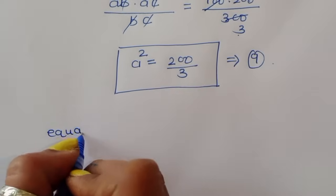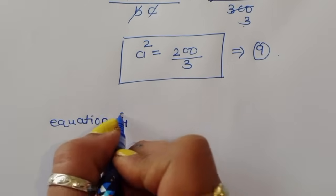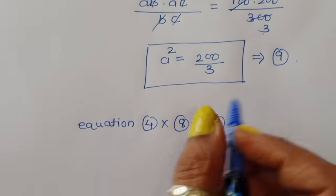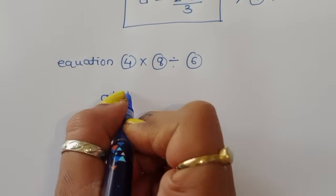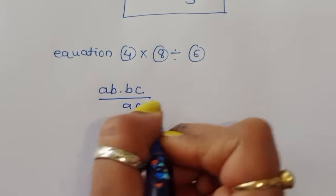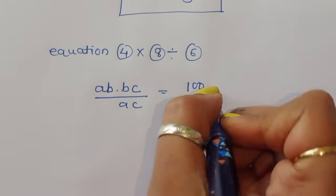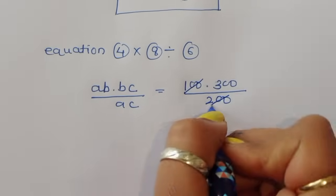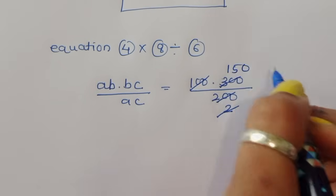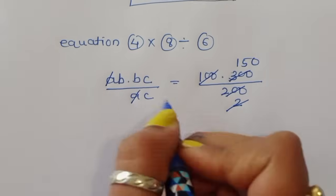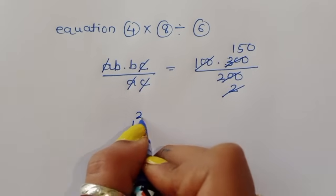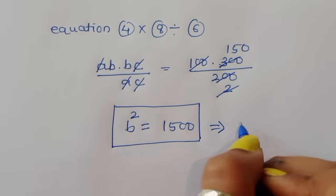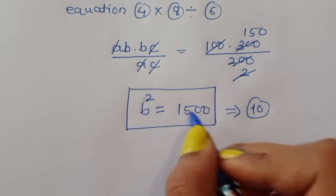Next, multiplying equation 4 (AB) times equation 8 (BC) divided by equation 6 (AC): AB times BC divided by AC equals 100 times 300 divided by 200, which gives 150. The A and C terms cancel, leaving B squared equal to 150. This is equation number 10.